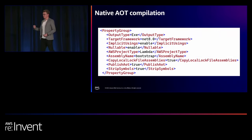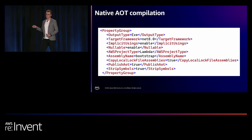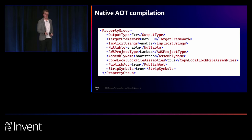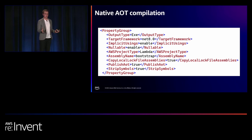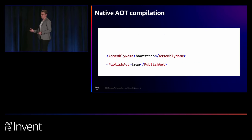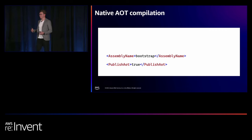First, you'll need to make sure the assembly — the executable you generate — is called bootstrap. When using native AOT with Lambda, you'll need a custom runtime, and Lambda custom runtimes just look for a file called bootstrap and execute it. Then you need to set the PublishAot flag to true in your project file, telling the .NET compiler to natively compile the application.